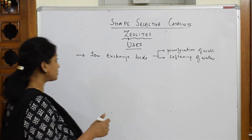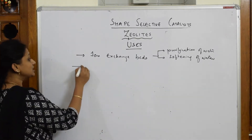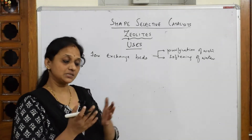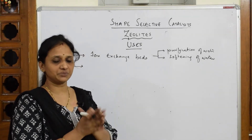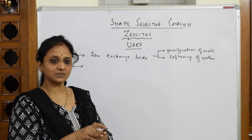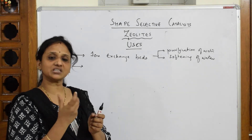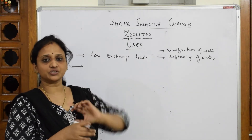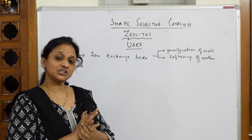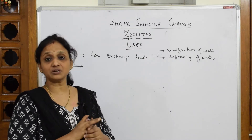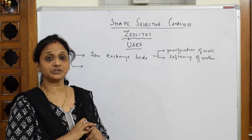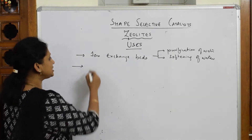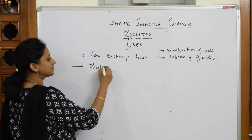Zeolites are also used in chemistry. Because of the honeycomb structure, we can fix different ions into it, through which the properties of different elements or compounds can be studied. Basically, zeolite acts as an adsorbent.